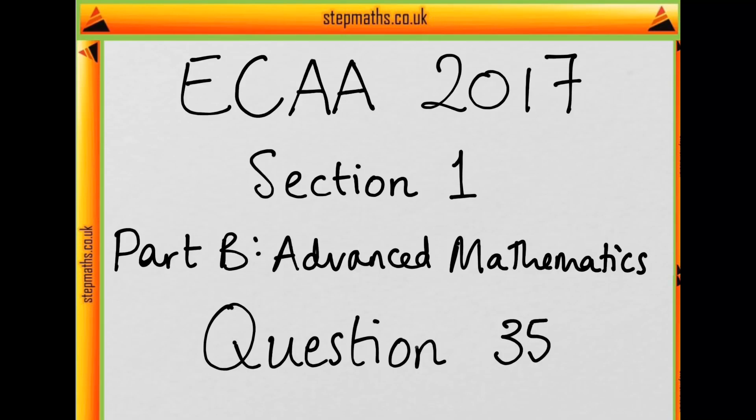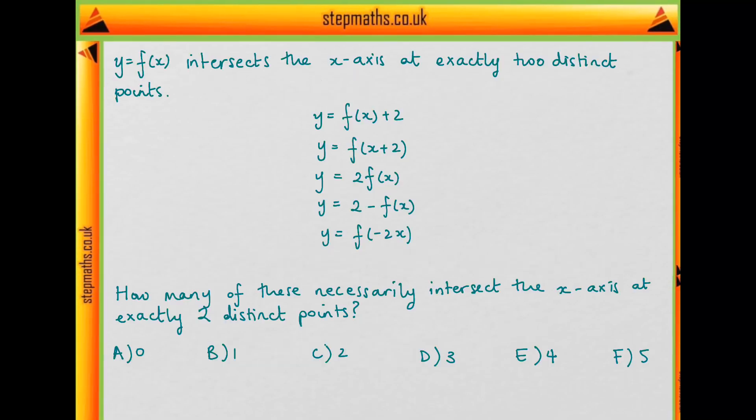Hello, this is ECA 2017 question 35. In this question we're told that the graph of y = f(x) intersects the x-axis at exactly two distinct points. We're told to consider these following graphs and they ask how many of these necessarily intersect the x-axis at exactly two distinct points.